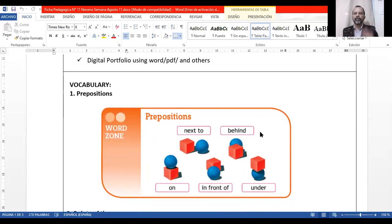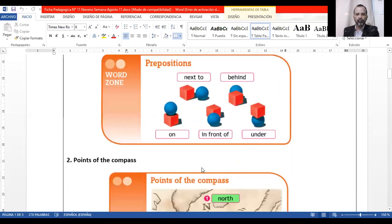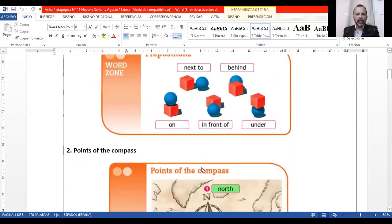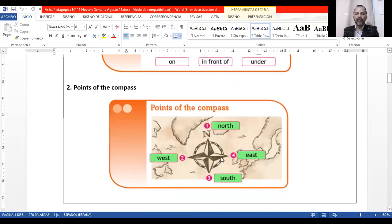Remember, this is from last year. It's just a review: next to, behind, on, in front of. There will also be between, over, etc. Points of the compass: we have north, south, east, and west.